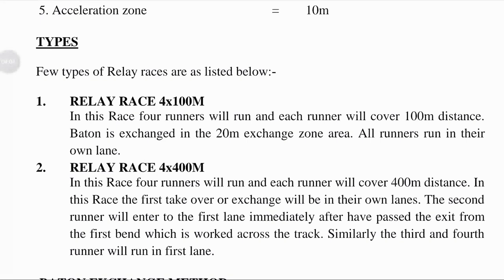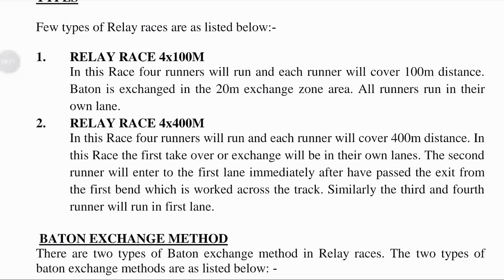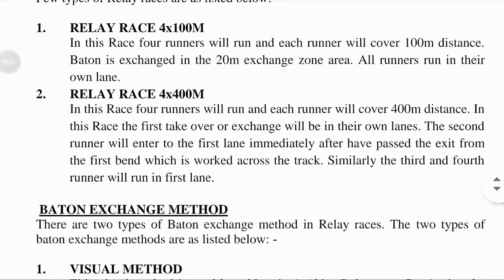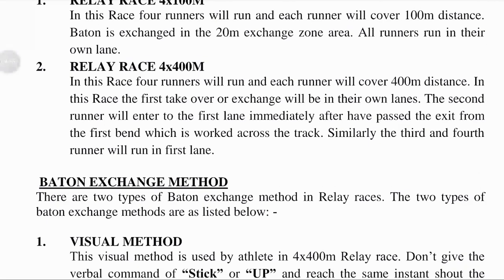Types of relay races listed below. Relay race 4x100 meter: the 4x100 meter relay race or sprint relay is an athletic track event run in lanes over one lap of the track, with four runners completing 100 meters each. The first runner must begin in the same stagger as for the individual 400 meter race. Each athlete runs 100 meters.